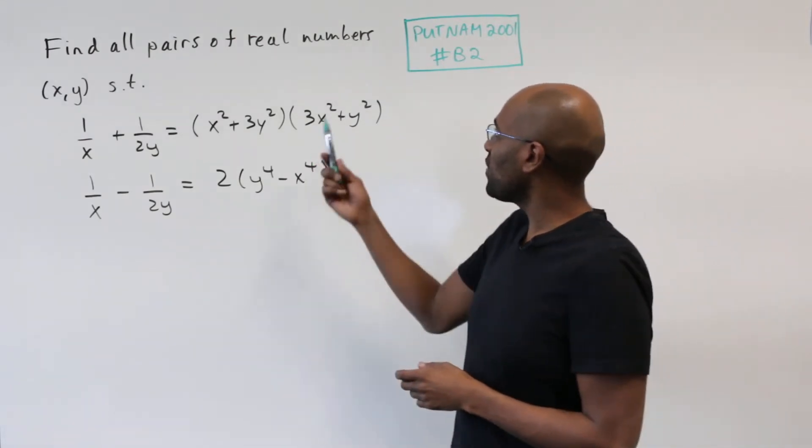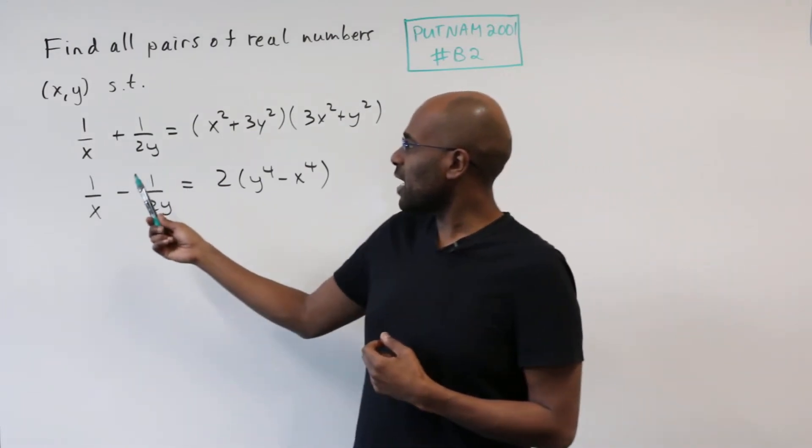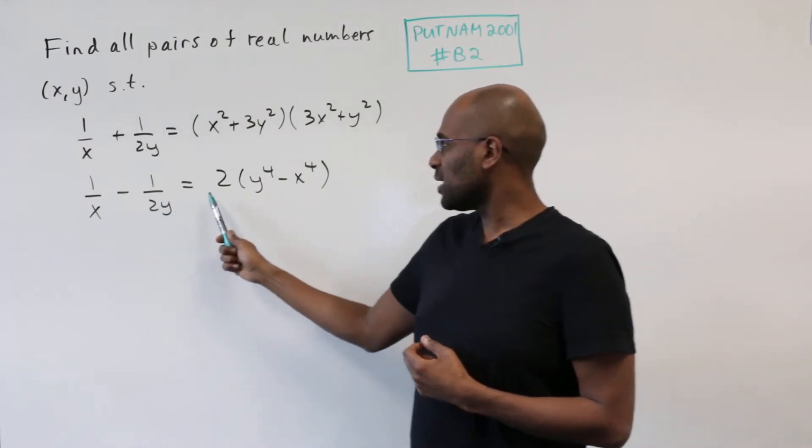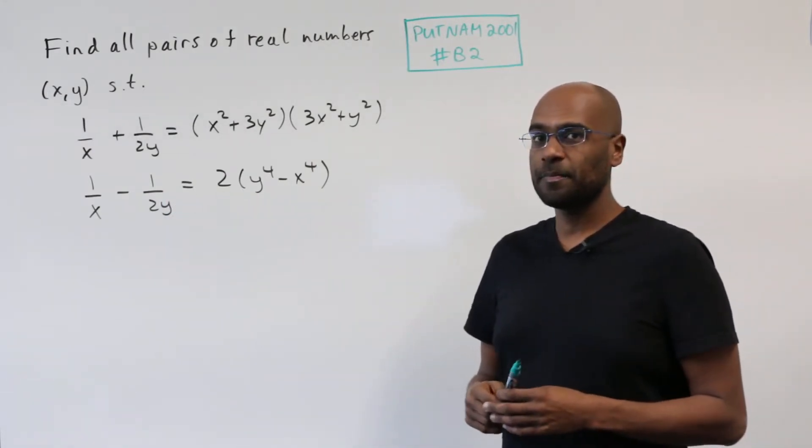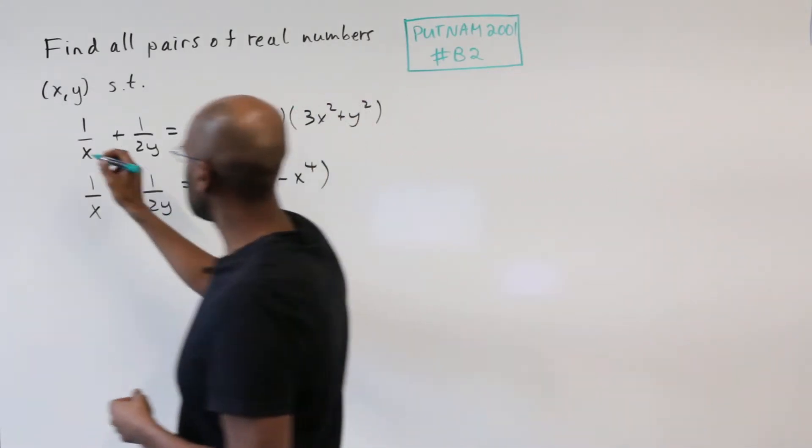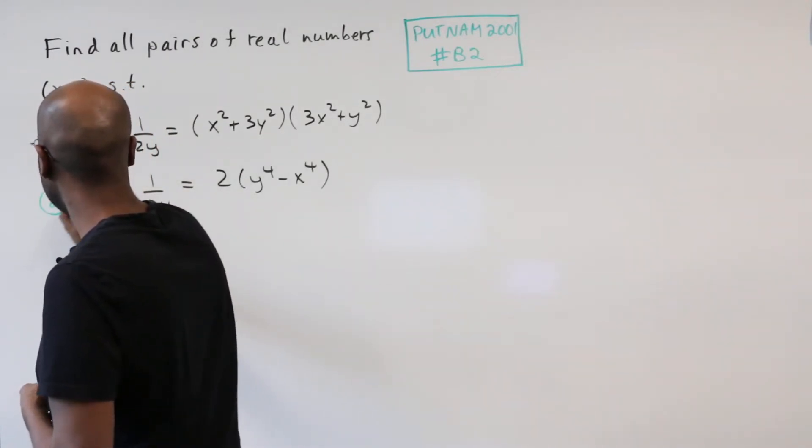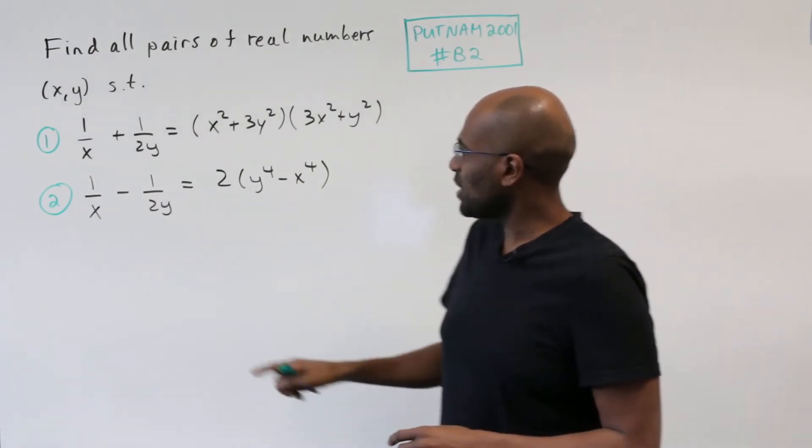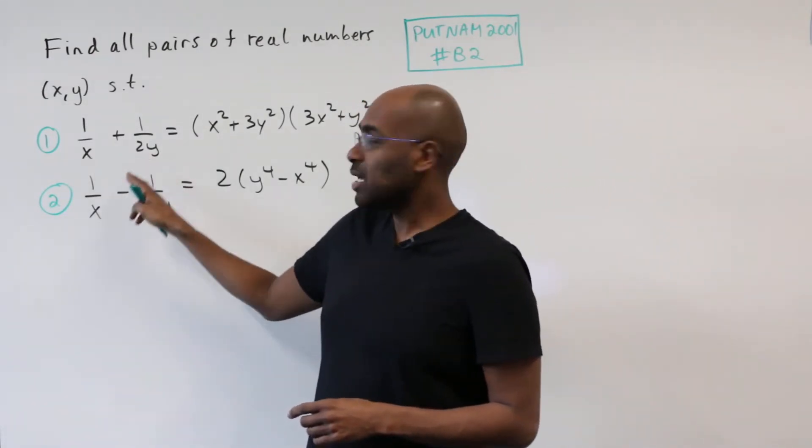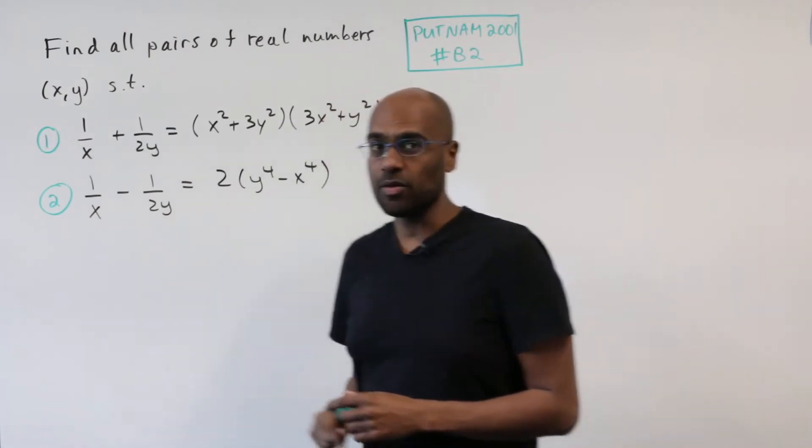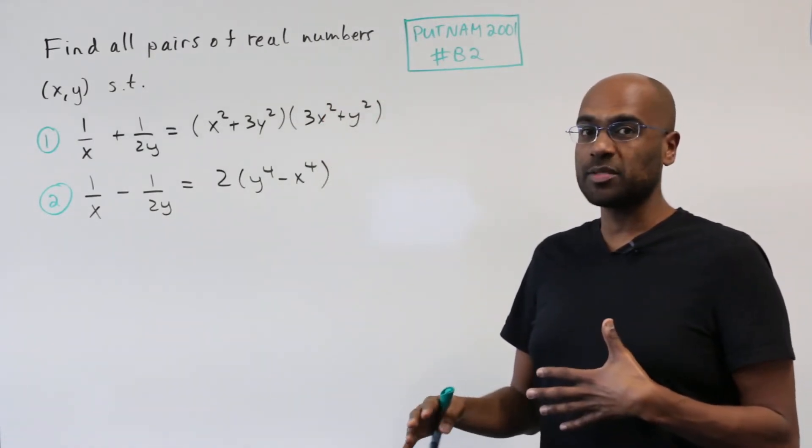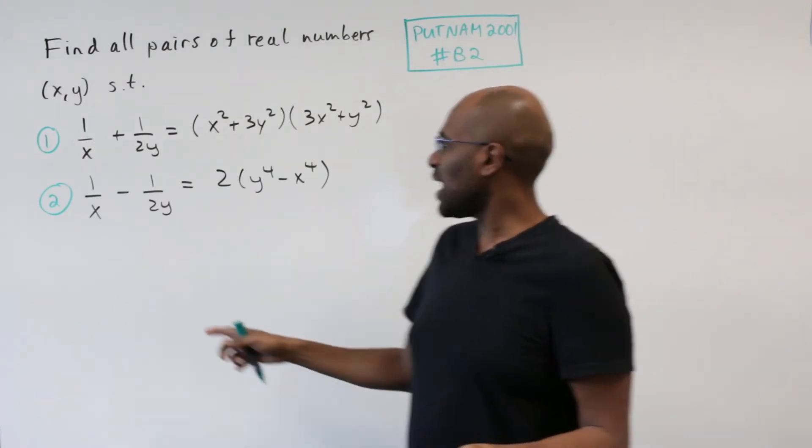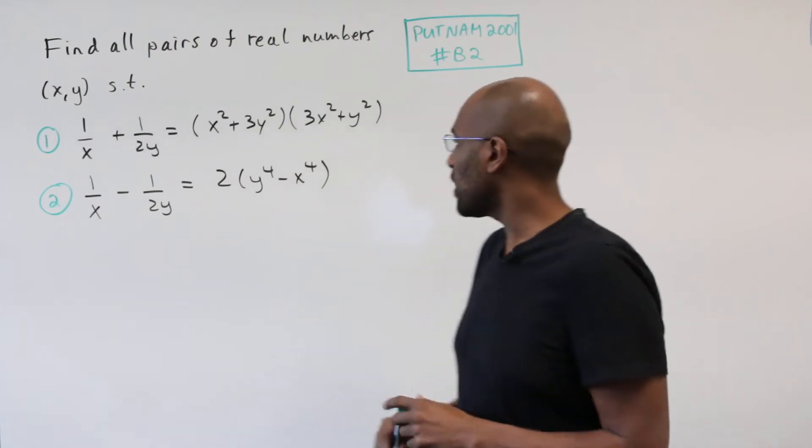So the question asks to find all pairs of real numbers x, y such that 1 over x plus 1 over 2y is this expression here and 1 over x minus 1 over 2y is this expression over here. So let's label these equations 1 and 2 and just make an observation about these that suggests a way to start. You notice that we have a quantity plus another quantity and a quantity minus that other quantity. So this suggests to possibly add and then also subtract these two equations to isolate each of the two constituents. So let's go ahead and do that.